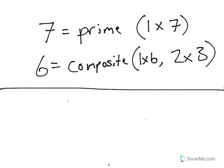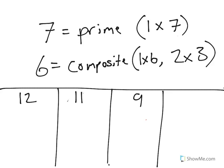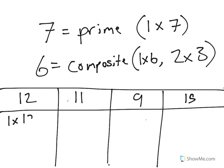Let's look at some numbers down here and decide whether they're prime or composite. We'll do the number 12, 11, 9, and 15. Let's think. All of them we can multiply by 1 and themselves, so we'll go ahead and write those out.